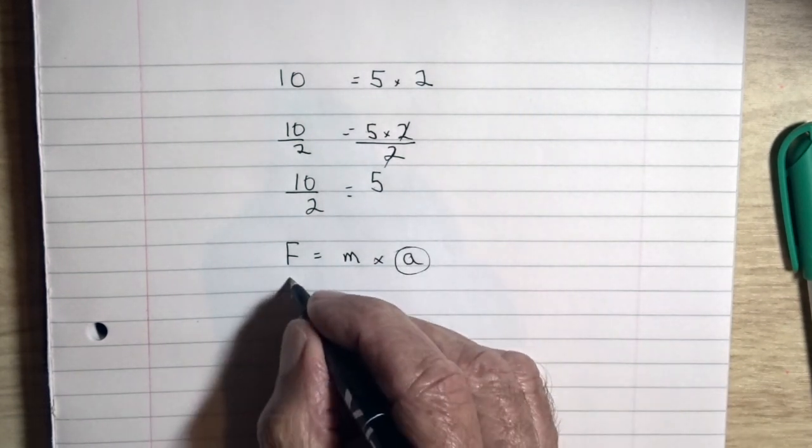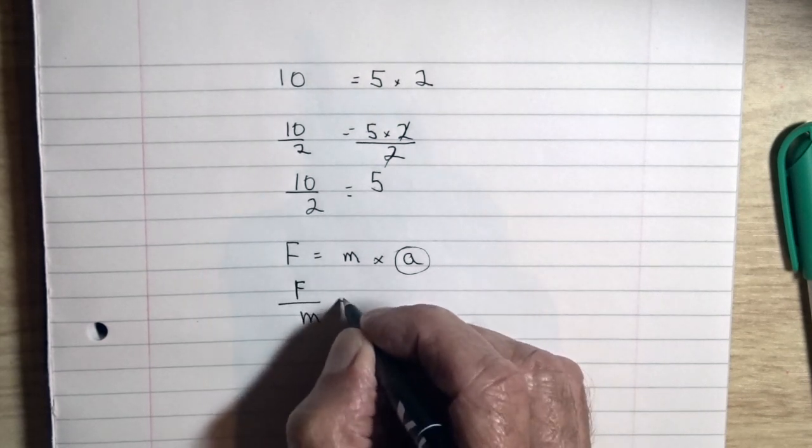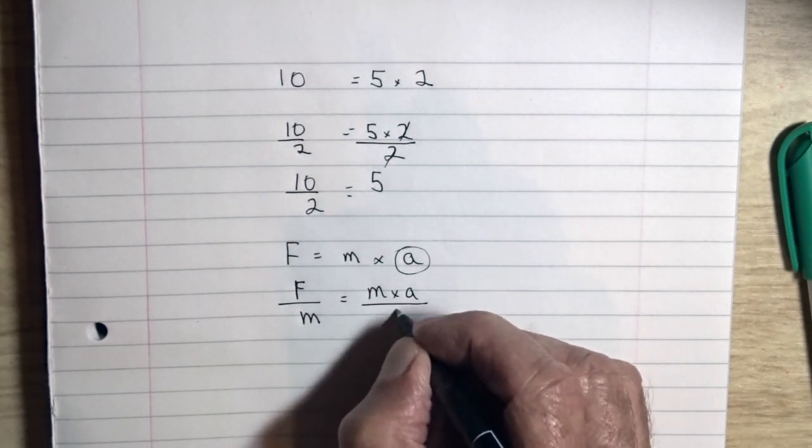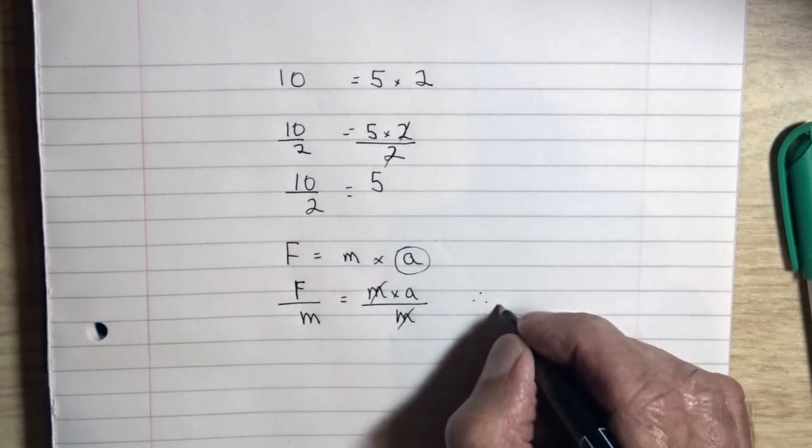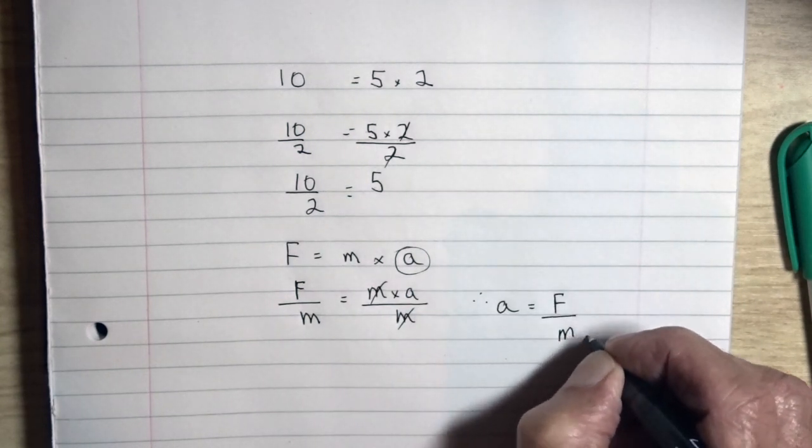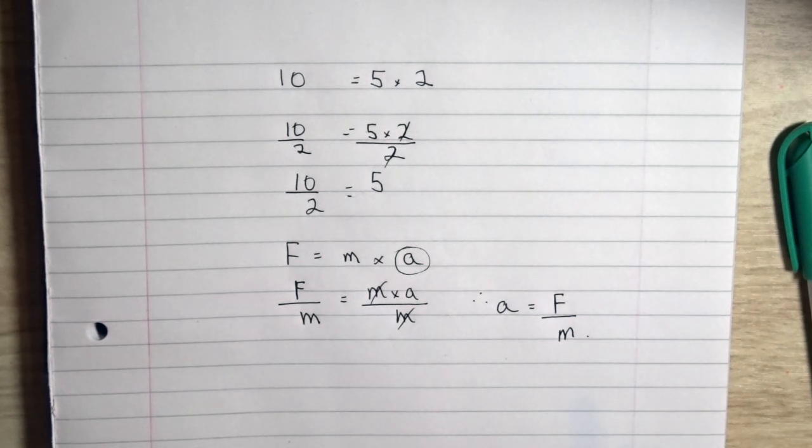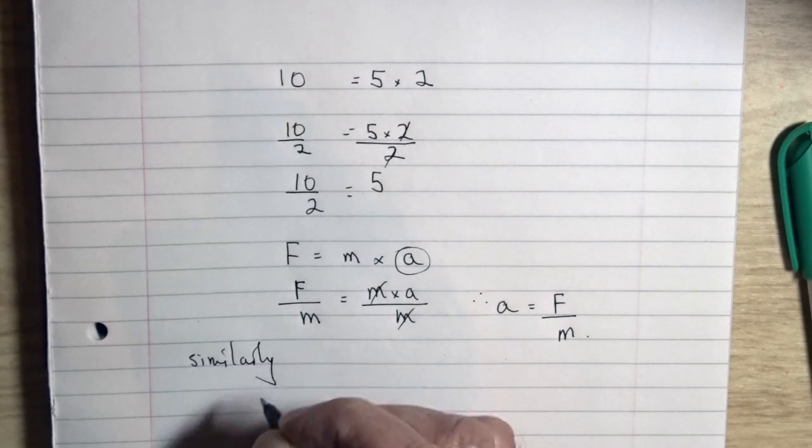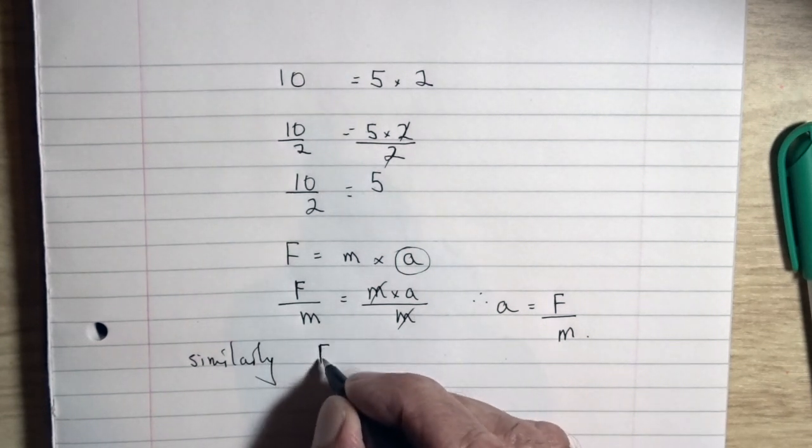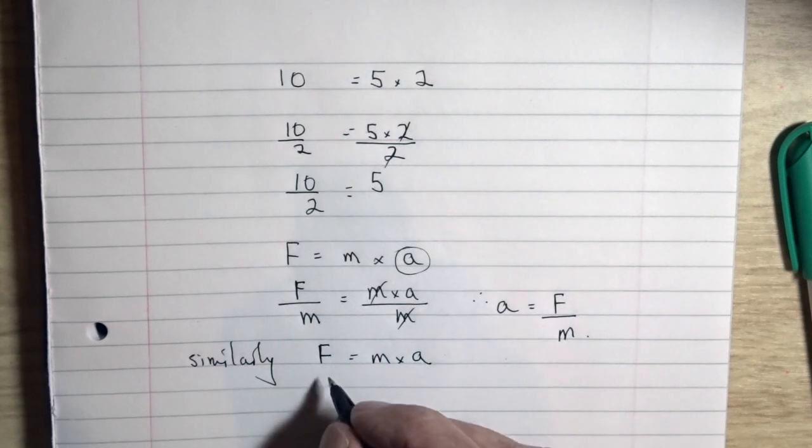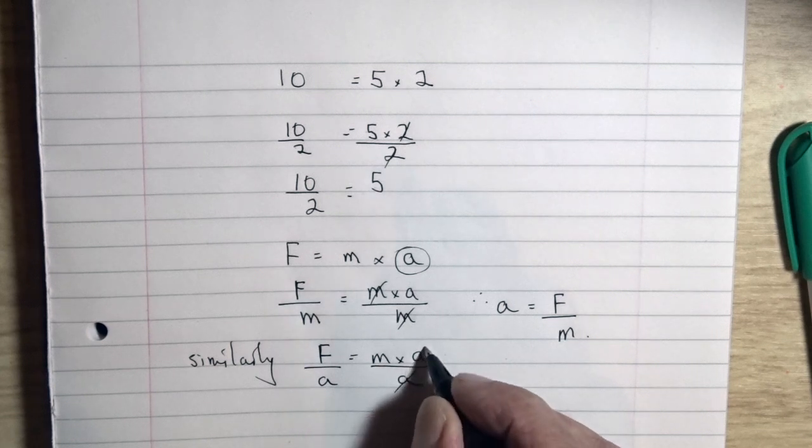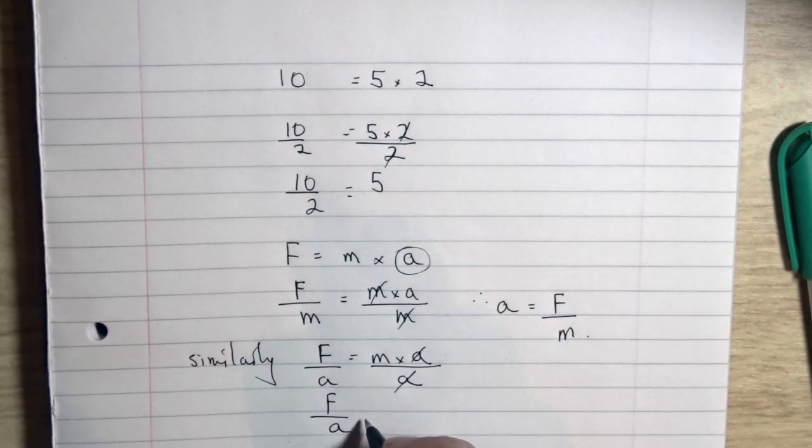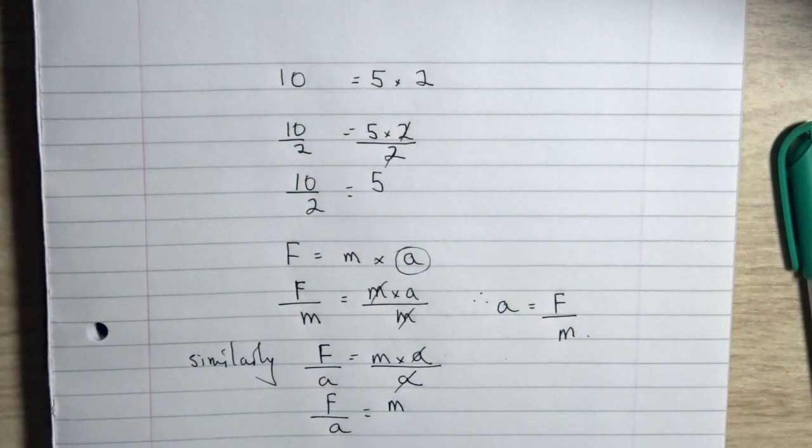Applying that to a commonly used physics equation, force equals mass times acceleration. If we want acceleration by itself, we can divide both sides by mass so the mass on the right hand side cancels out, leaving us with force over mass equals acceleration. Similarly, if we want the term mass by itself, we can divide both sides by the acceleration so the a's cancel out. Mass equals force divided by acceleration.